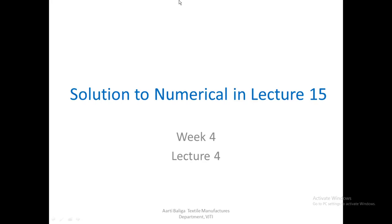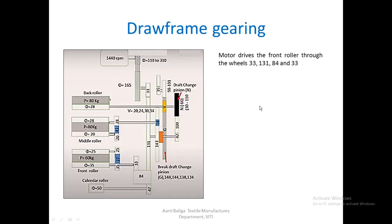Today we are going to see the solution to numericals that were given in lecture 15. This is the gearing diagram that was given to you, and the motor drives the front roller through these particular wheels: 33, 131, 84, and 33. This is how it goes.